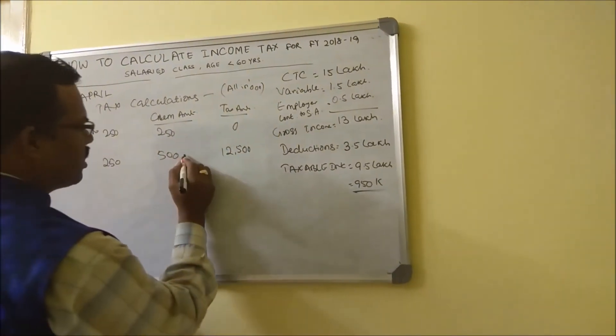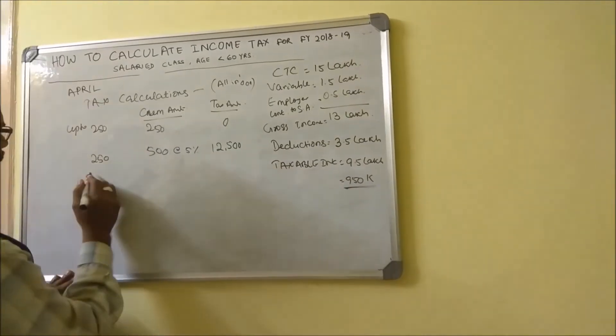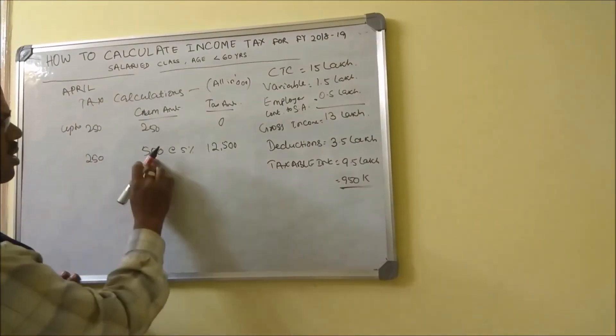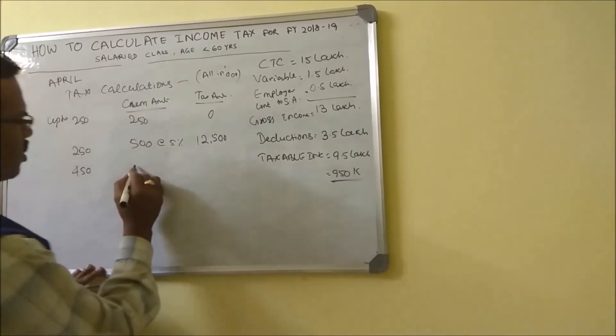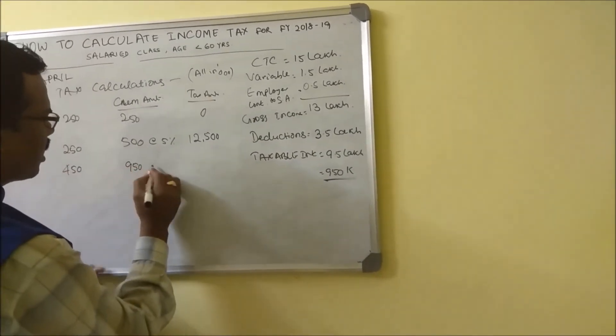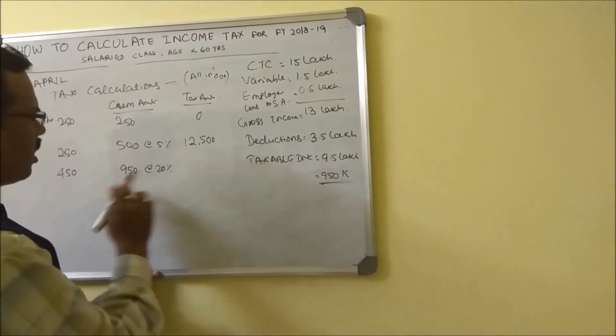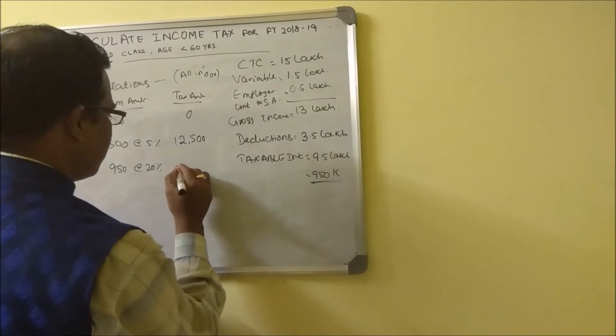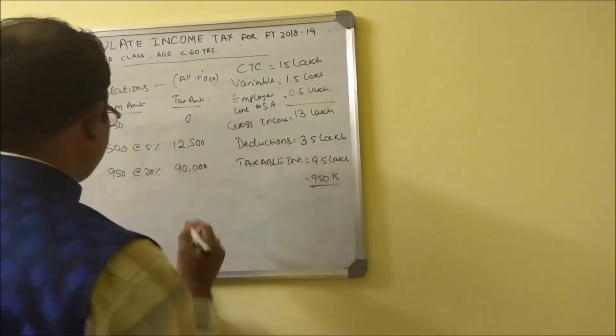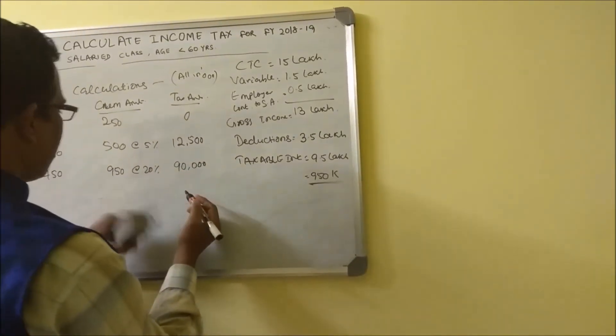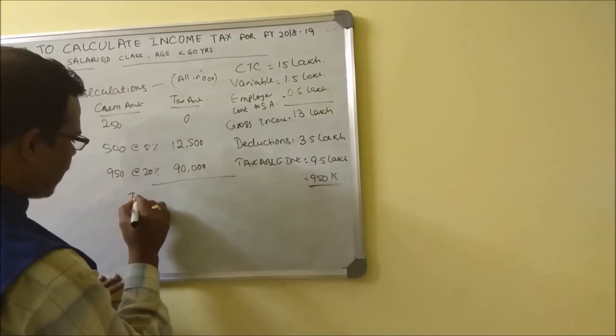This is at 5 percent as I mentioned. And again, how much remaining you have? 950k, so remaining is 450k. This comes to 950k. This amount comes at 20 percent, so 450 means it is 90,000. So now your tax payable is 102,500.